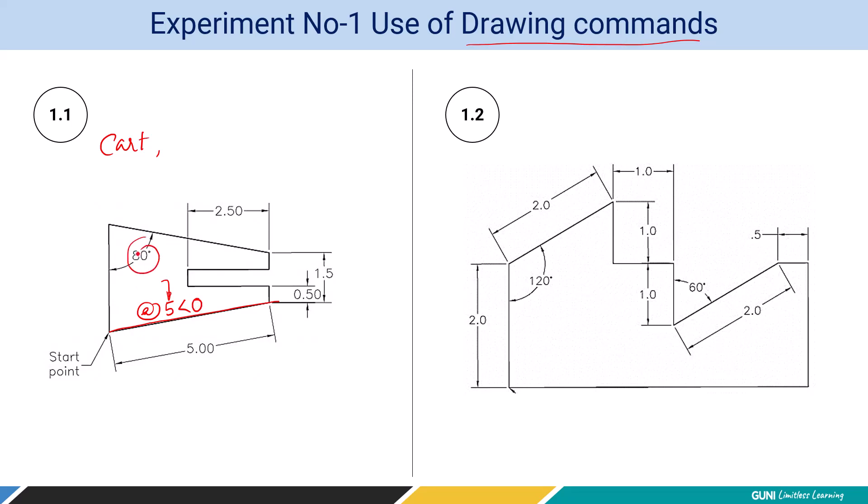But here, this is 80 degree, this is also 80 degree. So from the horizontal, it will be 10 degree. So I have to enter here 10 degree. That will draw this line.